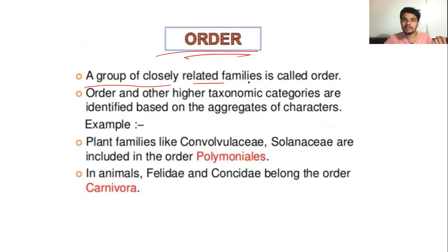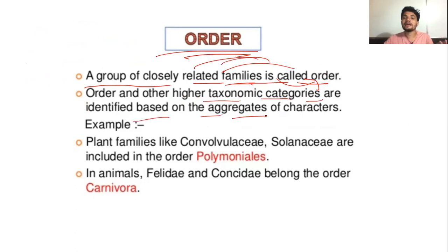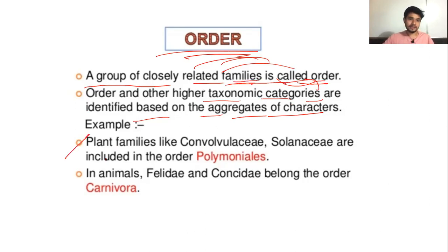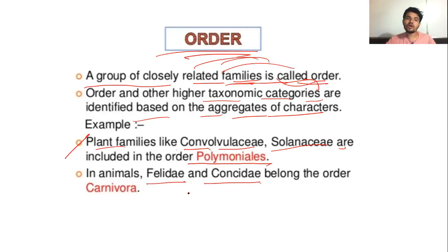What is order? A group of closely related families is known as order. Order and other higher taxonomical categories are identified based on aggregates of characters. By identifying and studying those characters, we group them into particular types of groups. For example, plant families like Convolvulaceae and Solanaceae are included in order Polemoniales. In animals, Felidae and Canidae belong to the order Carnivora.